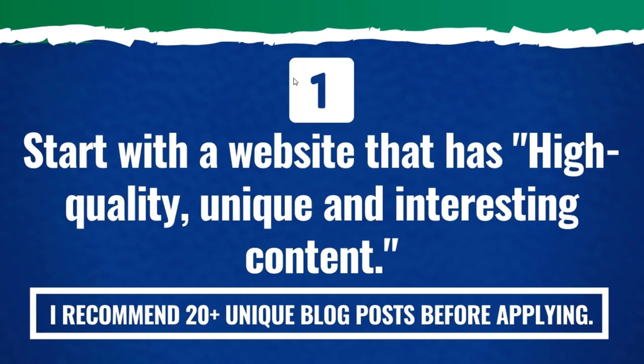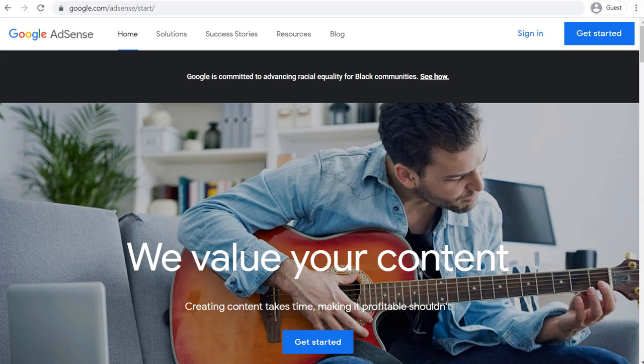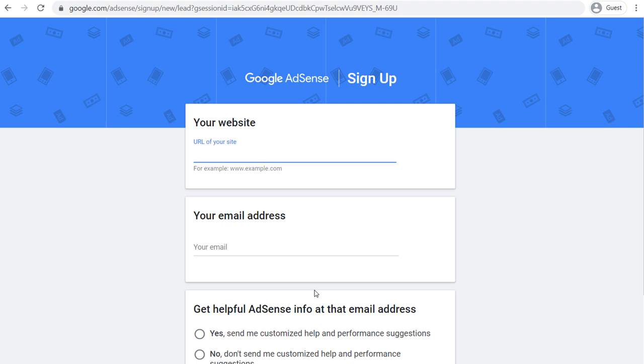So we're able to move on to step number two. You need to sign up for Google AdSense with your Google account or create a new Google account, and then sign up for affiliate programs for your business. Let's come over to Google AdSense first. If we go to google.com/adsense, you're going to see a page that looks like this. What you want to do is click on Get Started. If you don't have an account already, it's going to ask for the URL of your website.